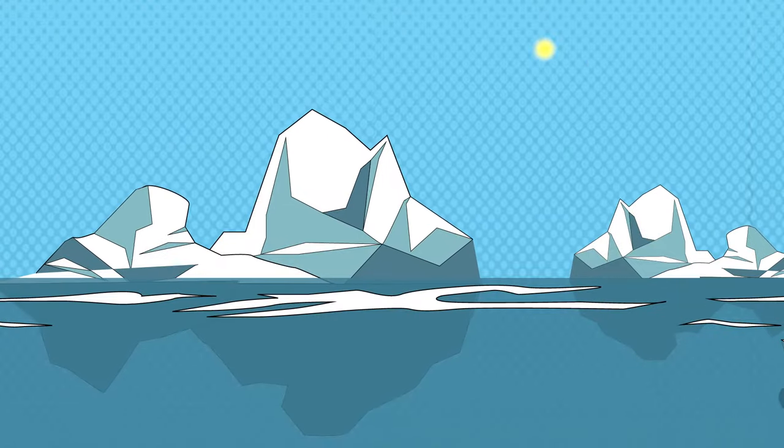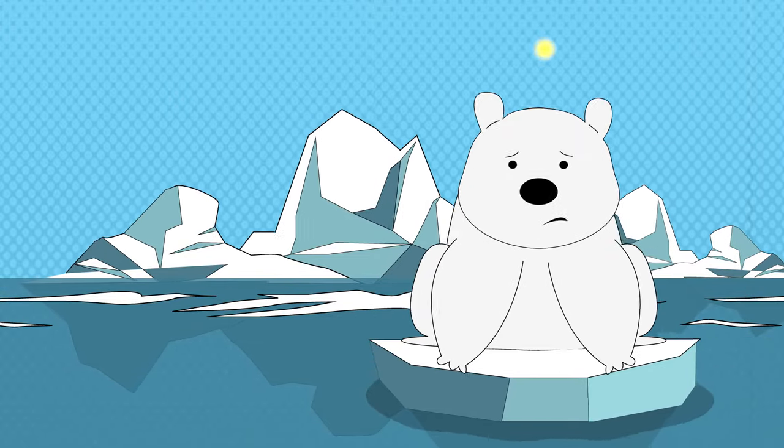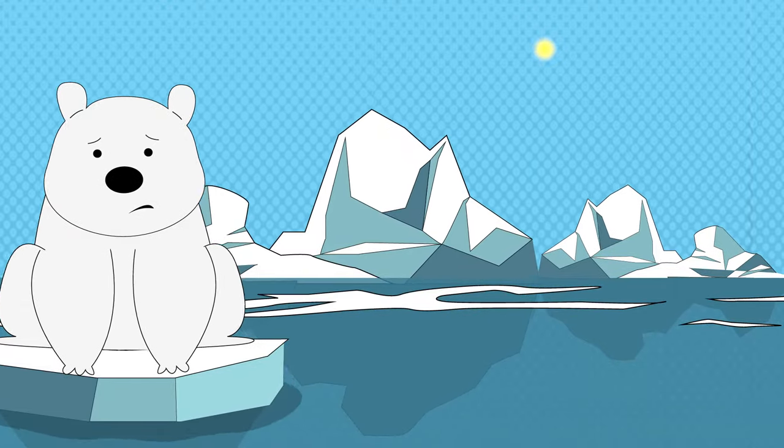For example, warmer weather in the Arctic and the subsequent melting of the sea ice has an effect on animals that live there. The polar bear is no longer well adapted for living in its habitat, and is an endangered species.